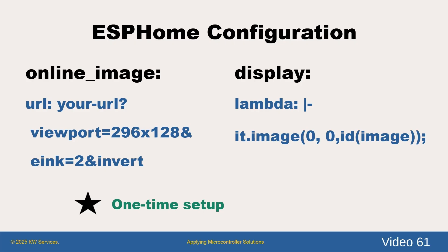You can add online image components which define the dashboard snapshot size. Notice we define that the E-ink display uses two colors and is inverted. Then we change the display component to simply have a single sensor which is the online image. We shall see the details for this all in a minute.